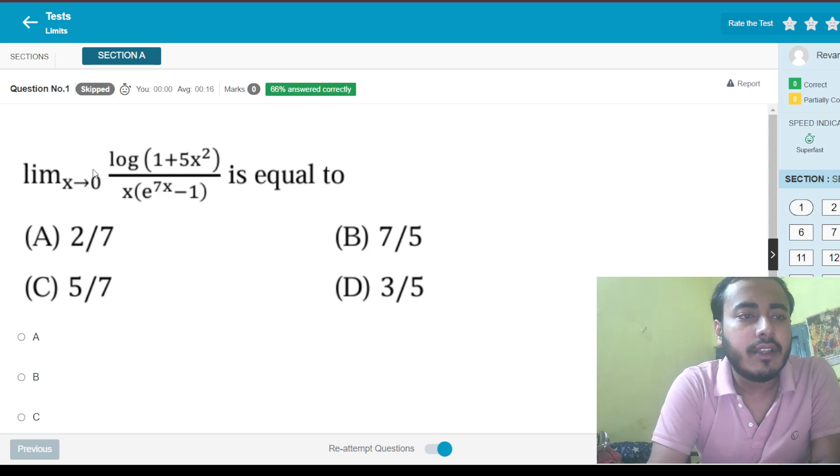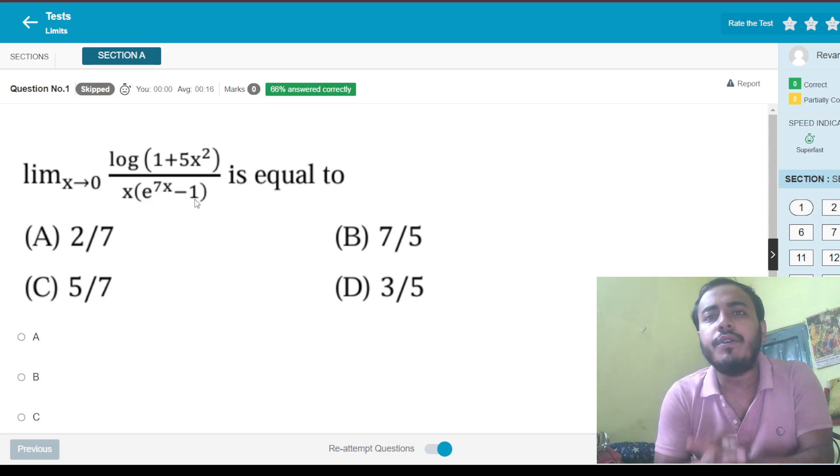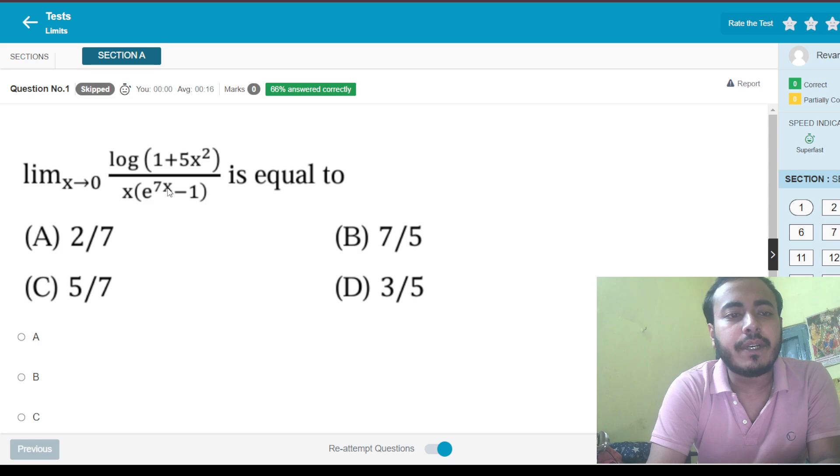Let us start with question number 1. Limit x tends to 0, log of 1 plus 5x squared by x times e to the power 7x minus 1. If you already know about the standard properties of logarithms and exponentials, you will directly identify that since x is tending to 0, you simply multiply x up and down. You have to make this e to the power 7x minus 1 whole divided by x, which means you will have this as x squared, and then also multiply 5 up and down. So this is going to be 5 by 7.